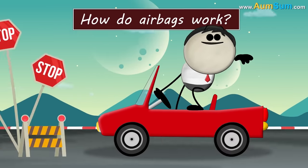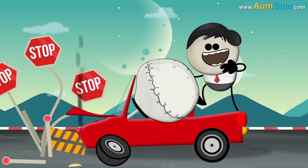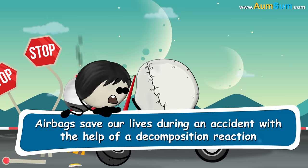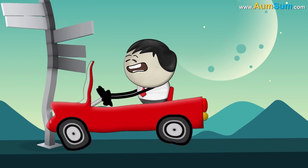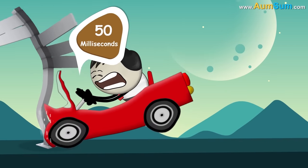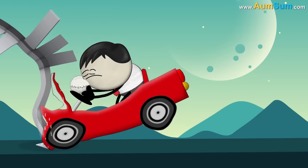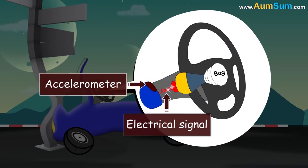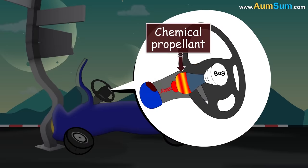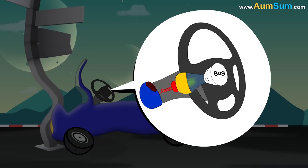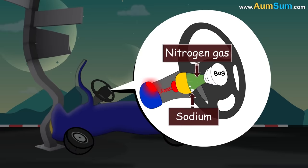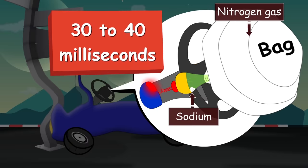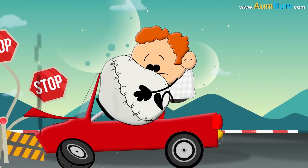How do airbags work? Airbags save our lives during an accident with the help of a decomposition reaction. During an accident or collision, it takes about 50 milliseconds for us to hit the steering wheel, so there is very little time within which the airbags must inflate. When there is a collision, sensors called accelerometers detect it and send an electrical signal to an igniter. The igniter ignites a chemical propellant called sodium azide, which decomposes, producing sodium and a large volume of nitrogen gas. This gas instantly inflates the airbag. Since this whole process takes just about 30 to 40 milliseconds, the airbags inflate before we hit the steering wheel, helping save our lives.